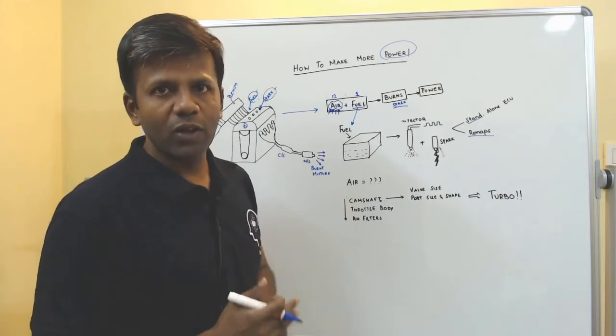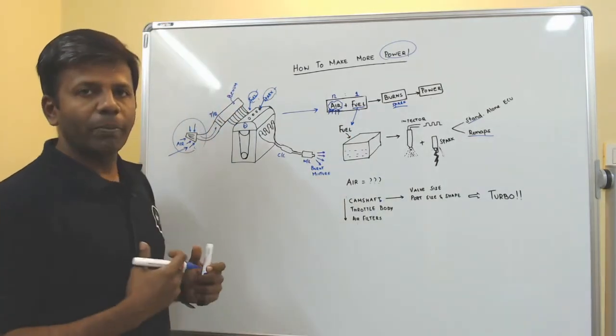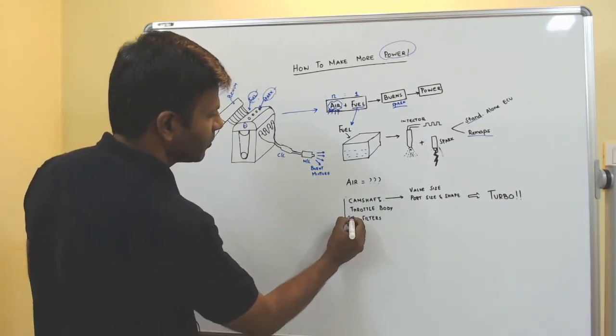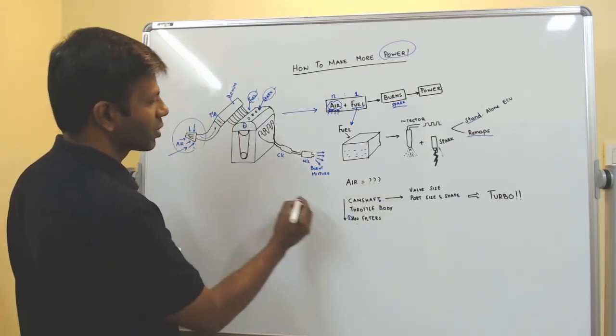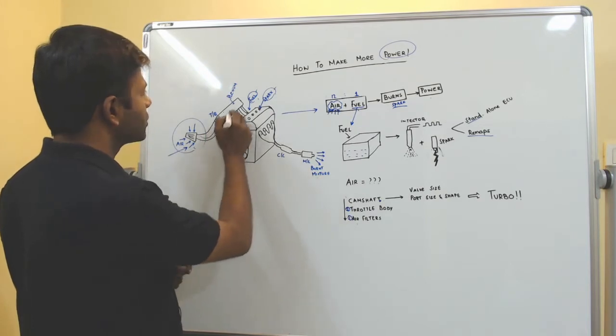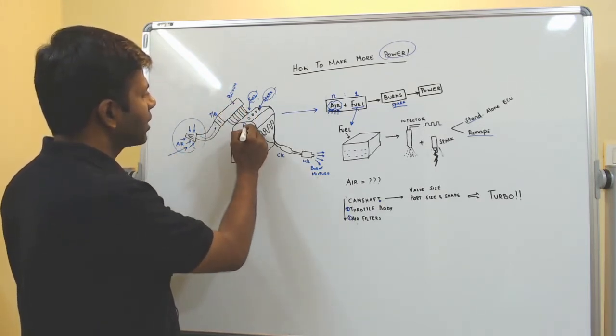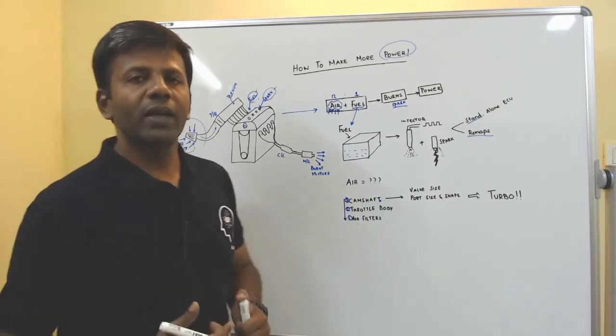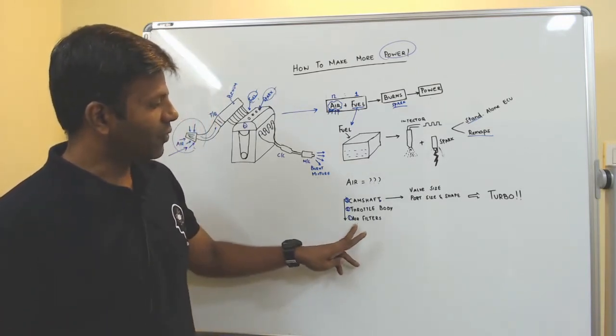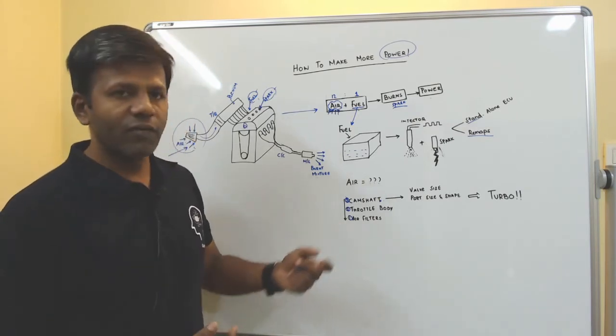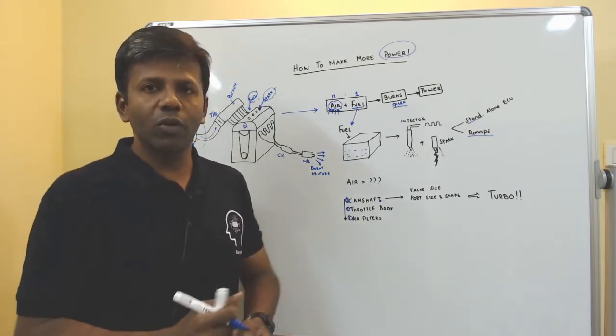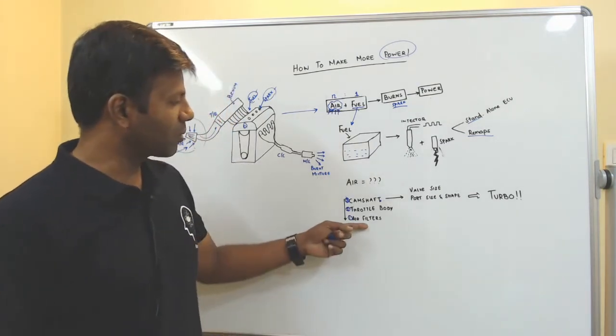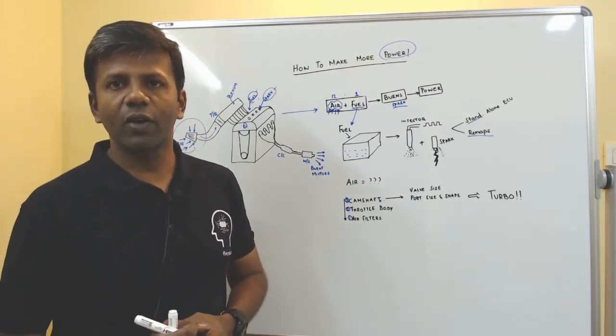So now how do you flow more air into the engine? Coming back here, let's see the path which the air is traveling. The first point of contact for air is your air filter which is here. Then it comes in here, it meets the throttle body, and of course there are going to be pipes here, but let's just leave that out. And finally you have the camshaft which is here. Now in order of decreasing importance, air filter is the lowest importance parameter here. Why? Because air filter is just filtering air, it is not controlling the amount of air which is going in. That is provided you don't have a very restrictive air filter. Air filter will not make much change in deciding how much air is flowing into the engine.